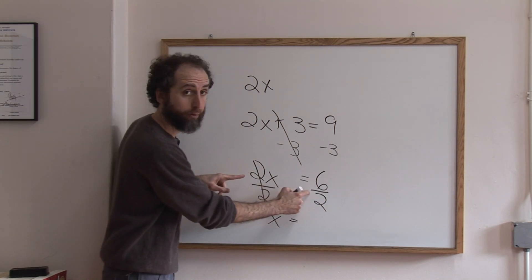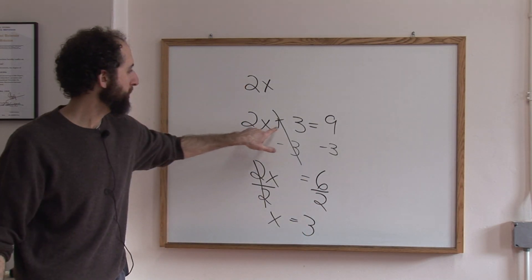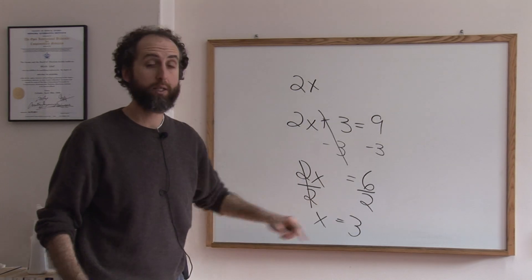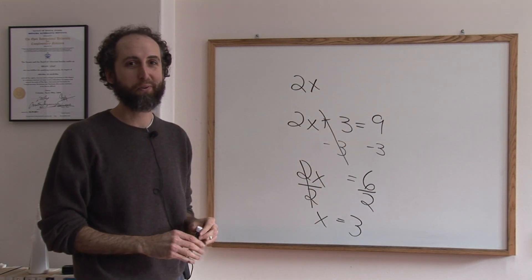Equals - whatever we did to this side, we had to do to this side. Six divided by two is three. So 2x plus 3 solved is x equals 3. Sorry, 2x plus 3 equals 9 solved is x equals 3.